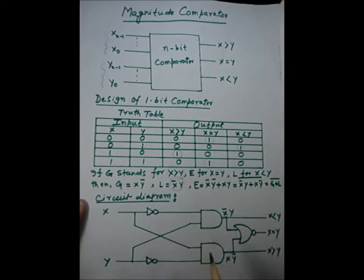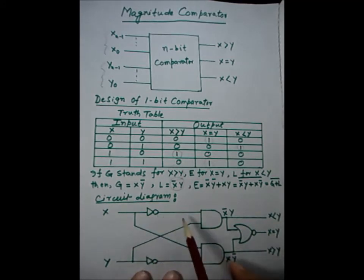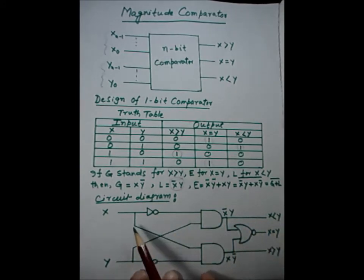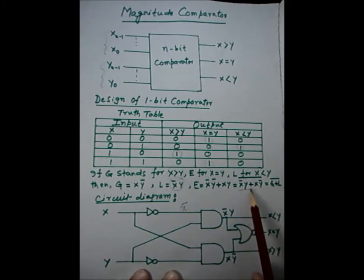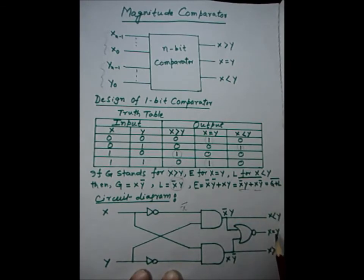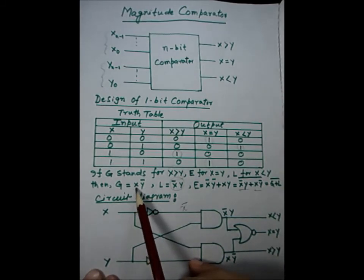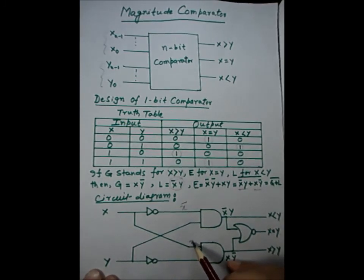We have drawn the circuit here. To get X̄·Y — the less-than output — we take the complement of X using an inverter to get X̄, and then AND it with Y, so X̄·Y goes high when X is less than Y. For X equal to Y, we implement the XNOR by taking the OR of the outputs L and G and then complementing it. For X greater than Y, we AND X with Ȳ, giving X·Ȳ.